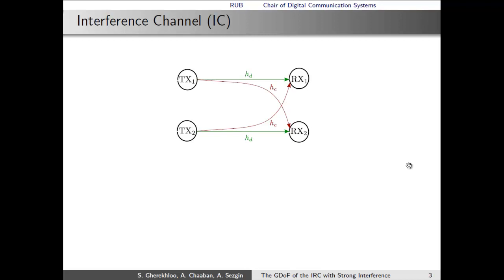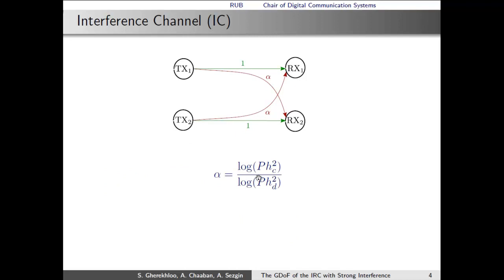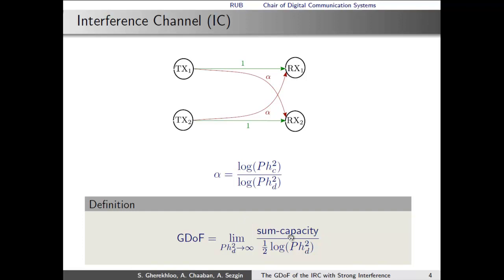Here is the basic interference channel with two transmitters and two receivers. Since the transmitters are active at the same time, they cause interference via those interference links at the non-intended receivers. We assume that the channels are real and that we have a power constraint at each node given by P. We now define the parameter alpha, which relates the received interference power to the received desired power. So the larger the interference gets, the larger gets alpha.